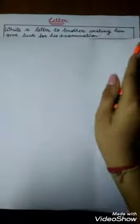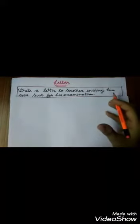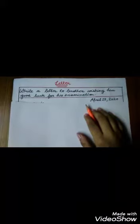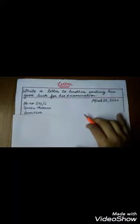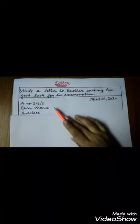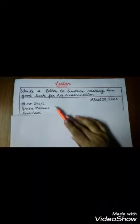Now let's discuss the letter that is given in your book. The heading given here is: write a letter to your brother wishing him good luck for his examination. At the beginning of the letter we will write down the date. After that we will write down the complete address of the sender. The complete address means we will write down the house number.